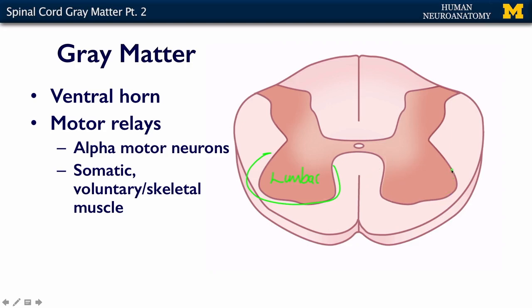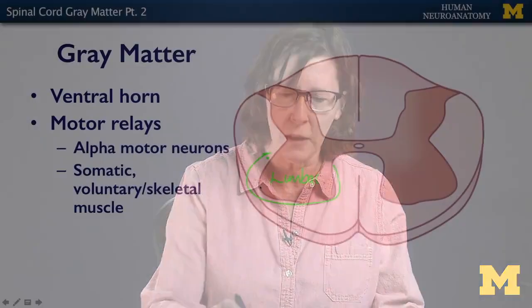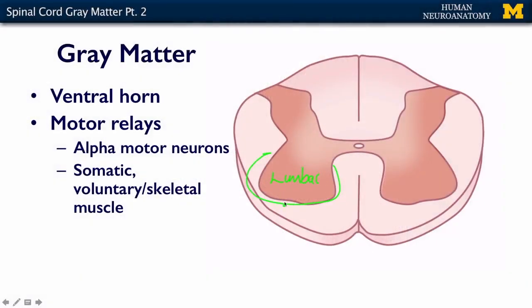All areas have alpha motor neurons, but because you've got limbs — if you were a snake, you would not have a lumbar enlargement because you don't have any limbs — you have a lot more neurons to innervate those limbs. They're great big alpha motor neurons with long axons that go out to neuromuscular junctions, and they innervate somatic, i.e., voluntary skeletal muscle.